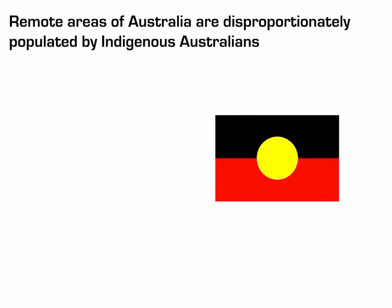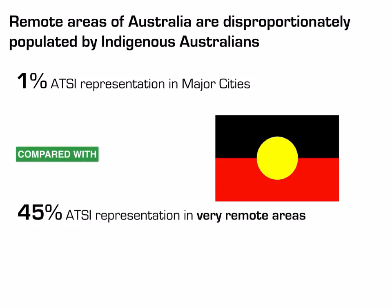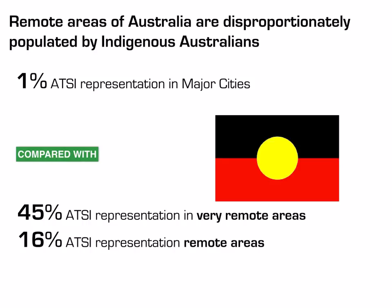Remote areas of Australia are disproportionately populated by Indigenous Australians. Only 1% of the ATSI population lives in major cities, compared with 45% in very remote areas and 16% in remote areas. Rural and remote areas therefore have a large proportion of ATSI people, and we know from prior study that they have a large health gap when compared to the rest of the population.